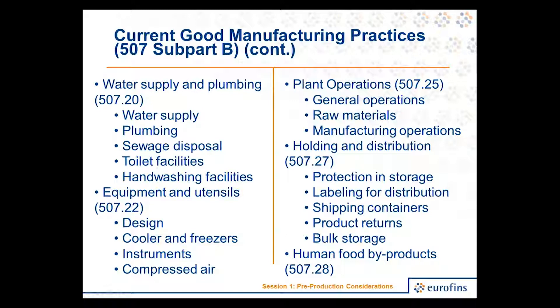One of the unique pieces here is the last section, which talks about human food byproducts. Basically, if you're a human food facility supplying ingredients to animal food facilities, in the past those byproducts were sometimes treated much like trash — indistinguishable from inedible product. Now there's a provision in the rule that says human food facilities providing byproducts to animal food cannot treat it like trash. They have to properly label it, protect it from contamination, and protect it during storage.